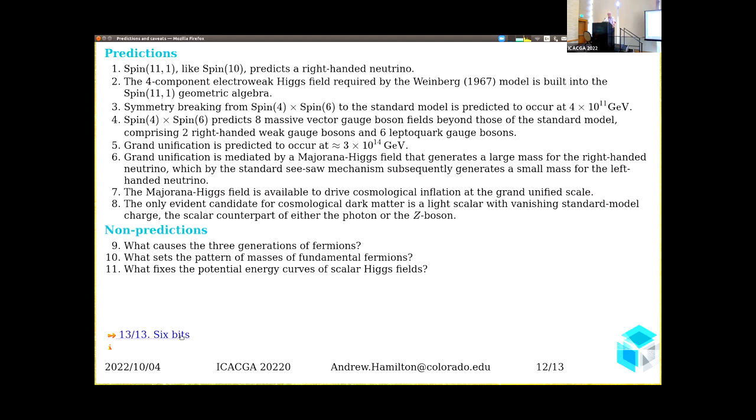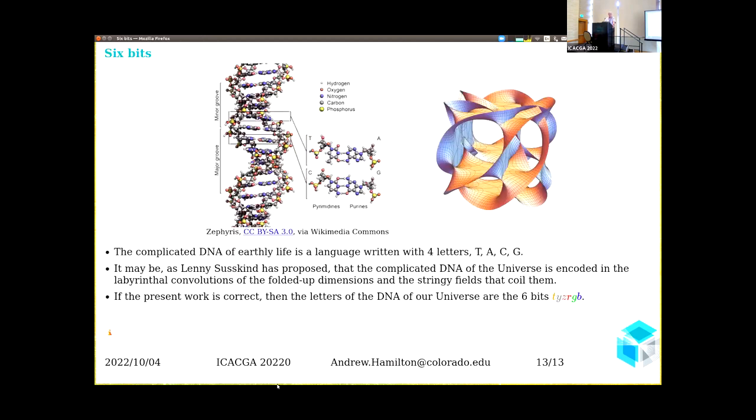There's some non-predictions. I don't know what causes the three generations or the masses of fundamental fermions. This morning I talked about the DNA of the universe. The complicated DNA of earthly life is a language written with four letters: T, A, C, and G. Lenny Susskind has proposed that the complicated DNA of the universe is included in the labyrinthal convolutions of the folded up dimensions and the stringy fields that coil. If the present work is correct, then the letters of the DNA of our universe are the six bits: T, Y, Z, R, G, and B.